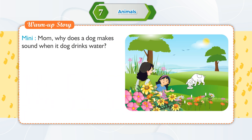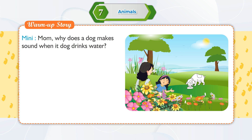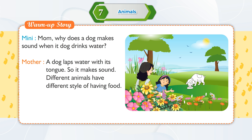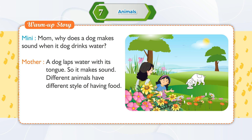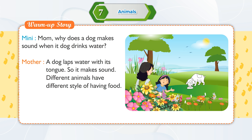Minnie asks: Mom, why does a dog make sound when it drinks water? Mother replies: a dog laps water with its tongue, so it makes sound. Different animals have different styles of having food.